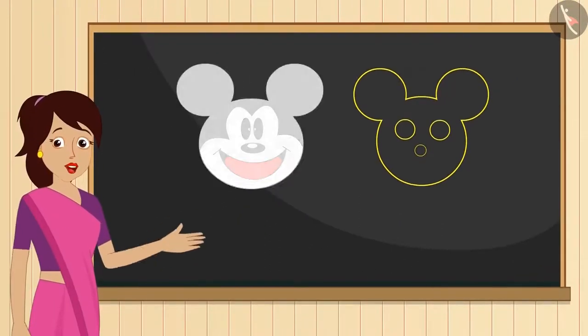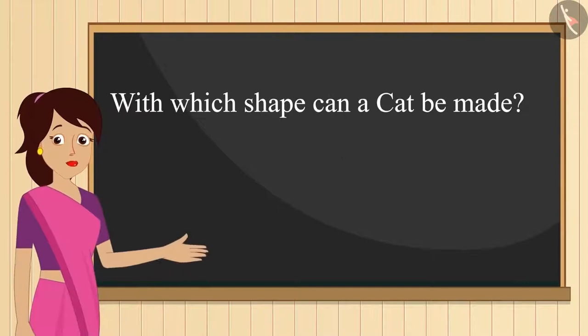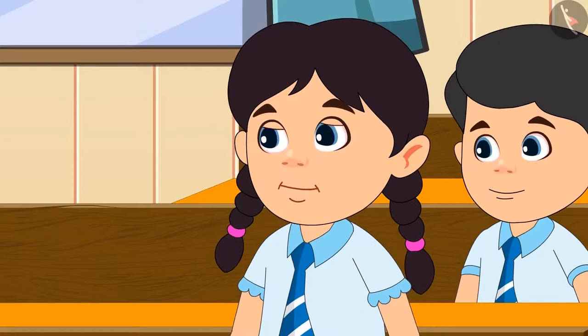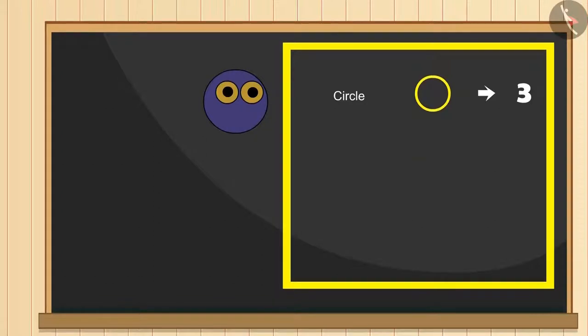Absolutely correct. Now tell me can anyone of you draw the picture of a cat? Yes teacher, I will try to do that. First of all, its eyes and face are made from three circles. Then its tail and four legs can be made with six rectangles.